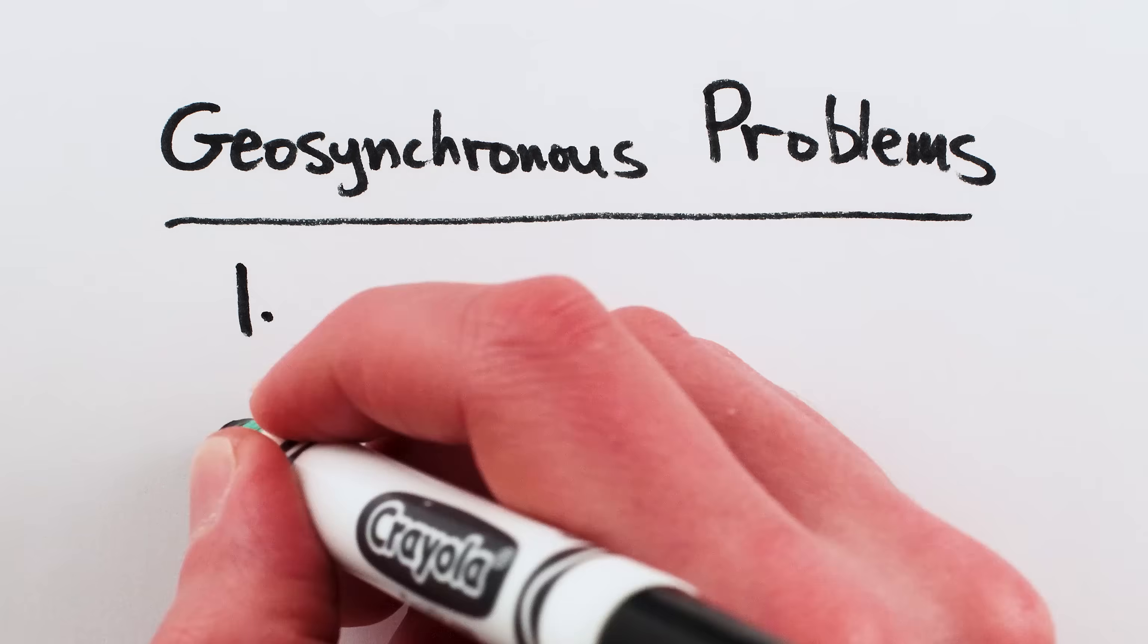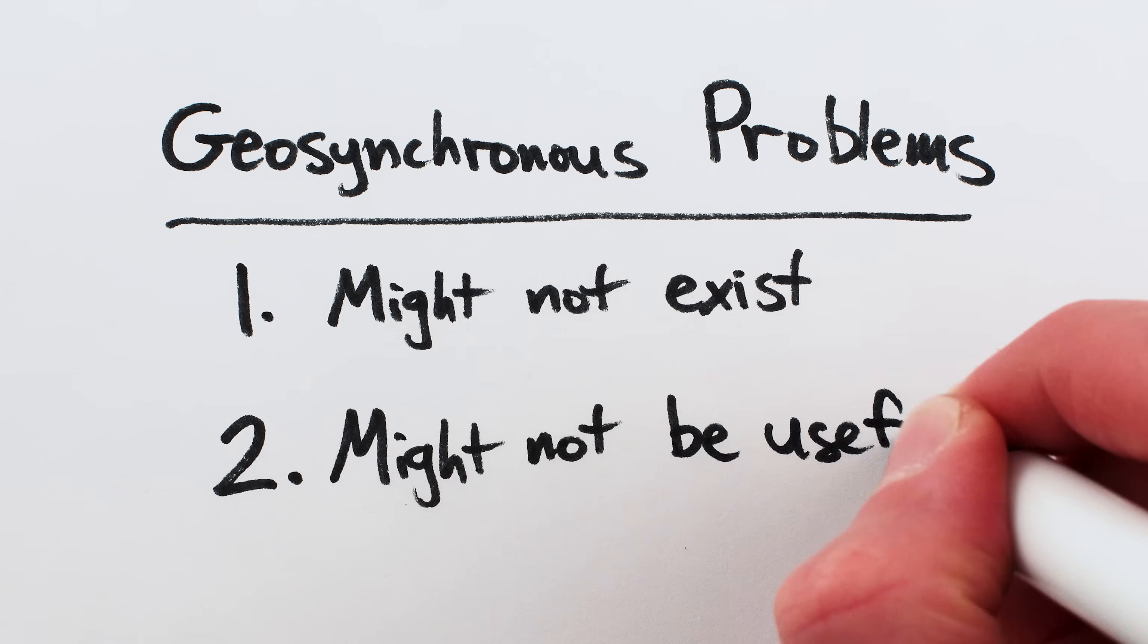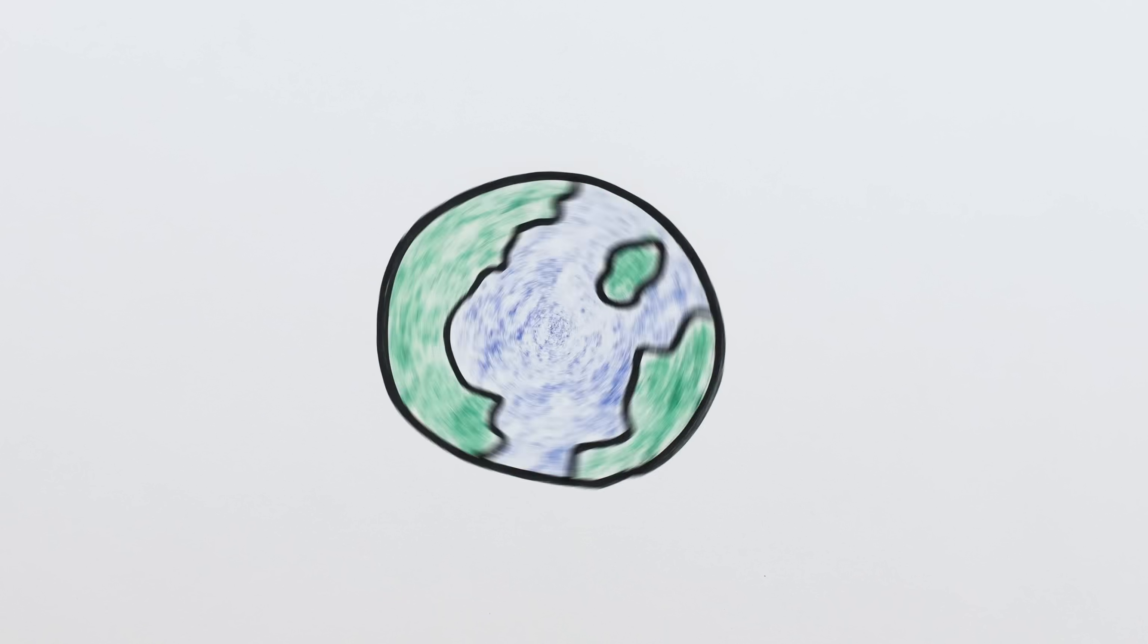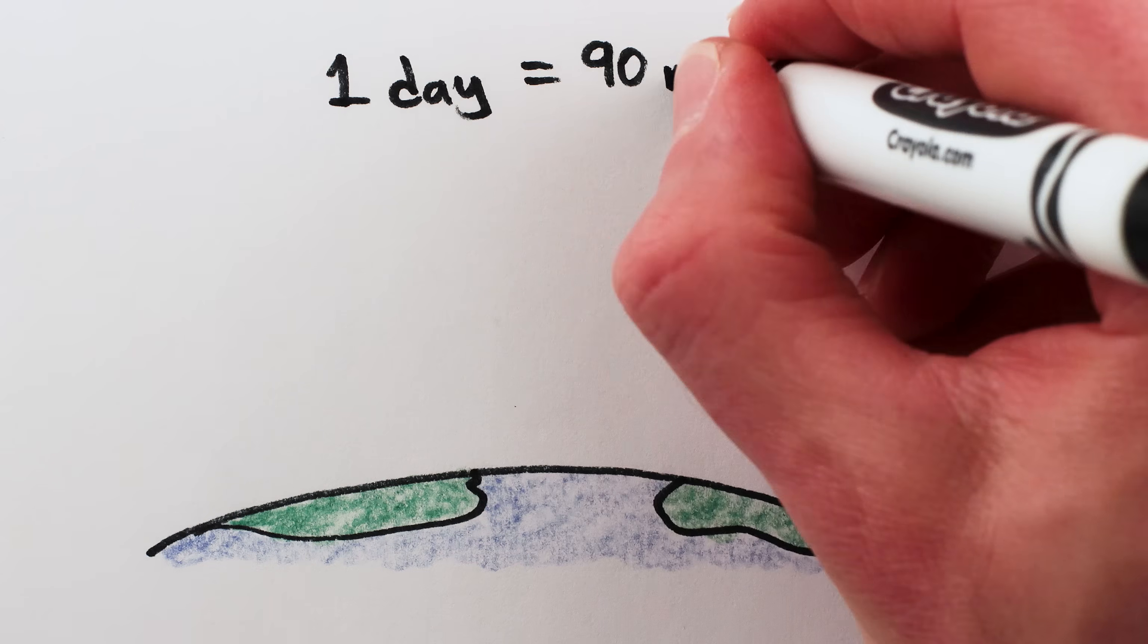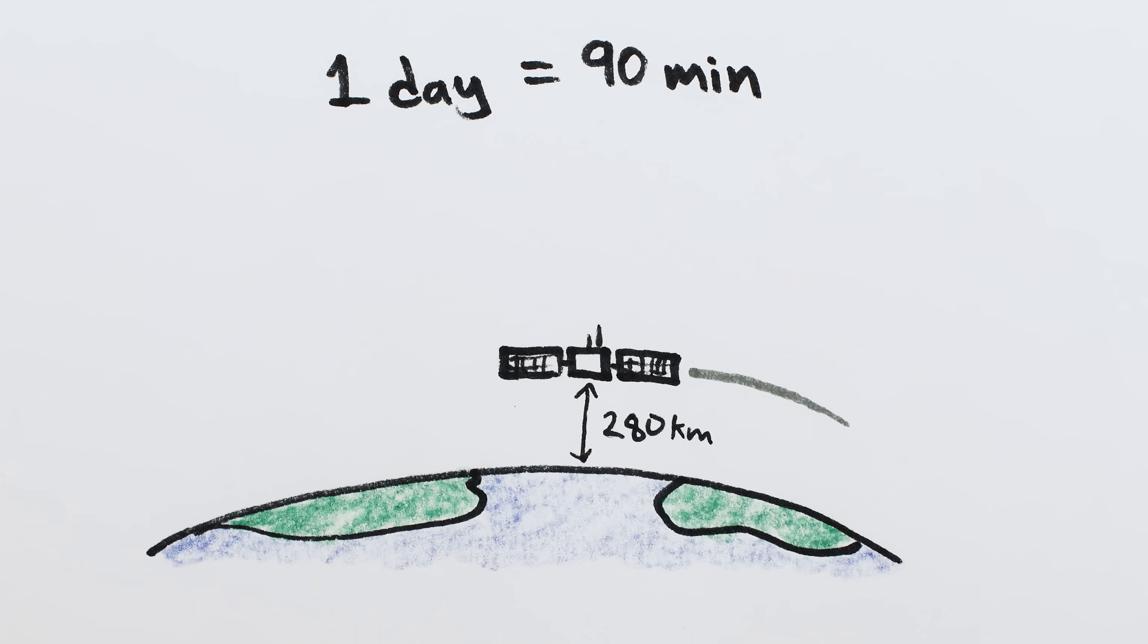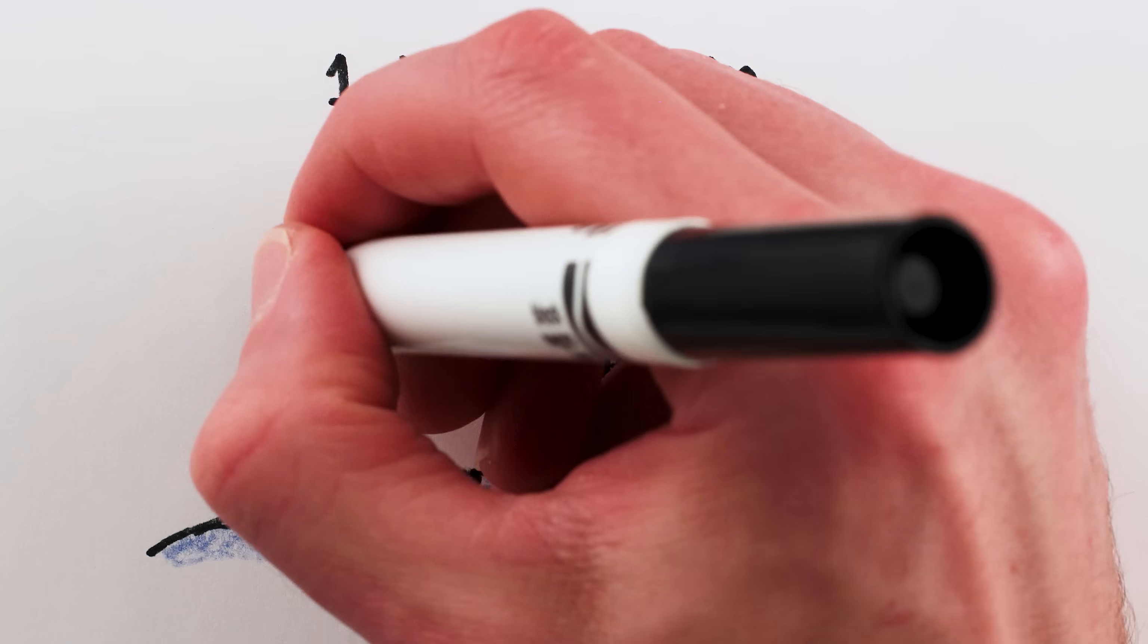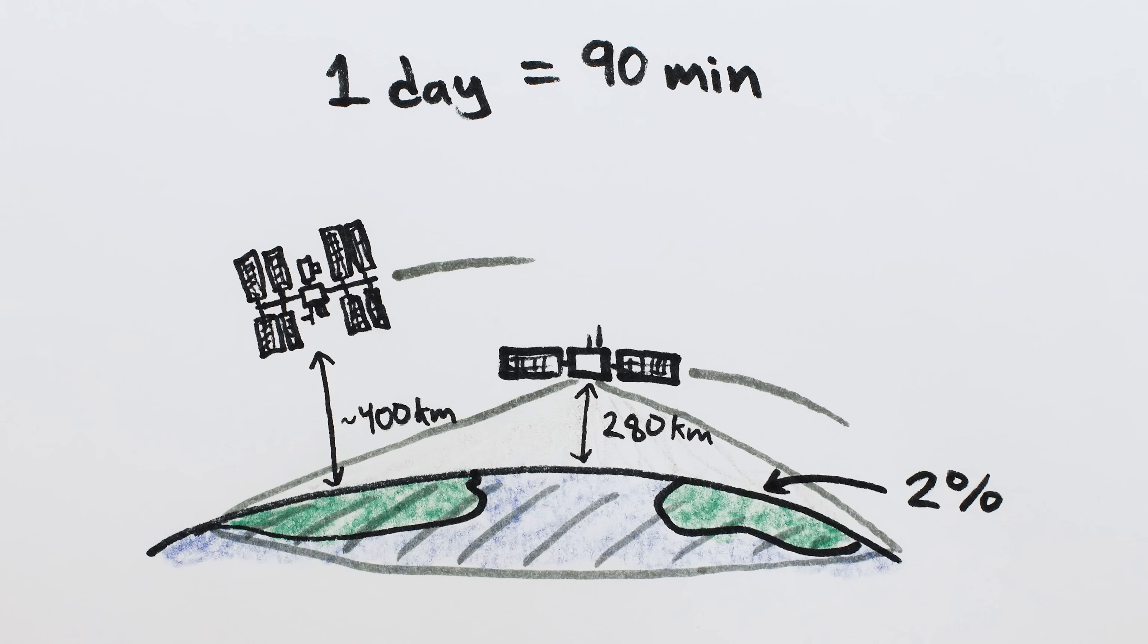And this brings us to the second potential problem with geosynchronous orbits. Even if they exist, they're not guaranteed to be useful. If a planet is spinning quickly, geosynchronous orbits around it might be too close to see much of the planet's surface. For example, if Earth took 90 minutes to spin instead of 24 hours, geosynchronous orbits would be at an altitude of around 280 kilometers, beneath the orbit of the International Space Station, and satellites there could only see 2% of the Earth's surface at one time, which is much less useful for communication.